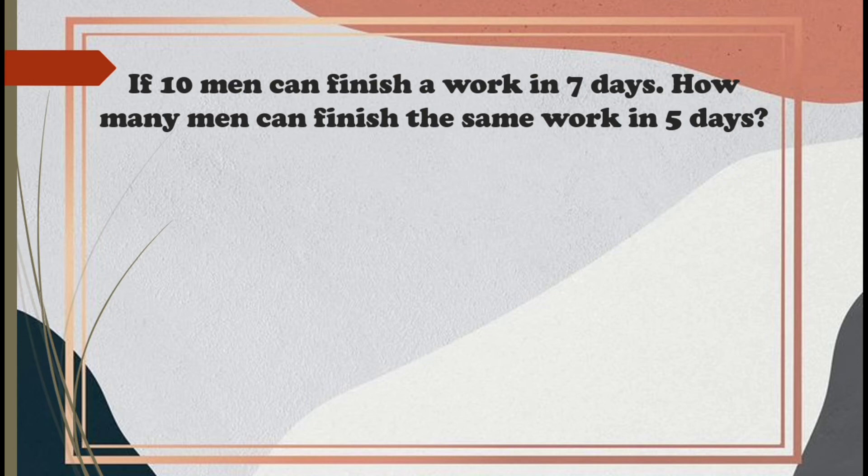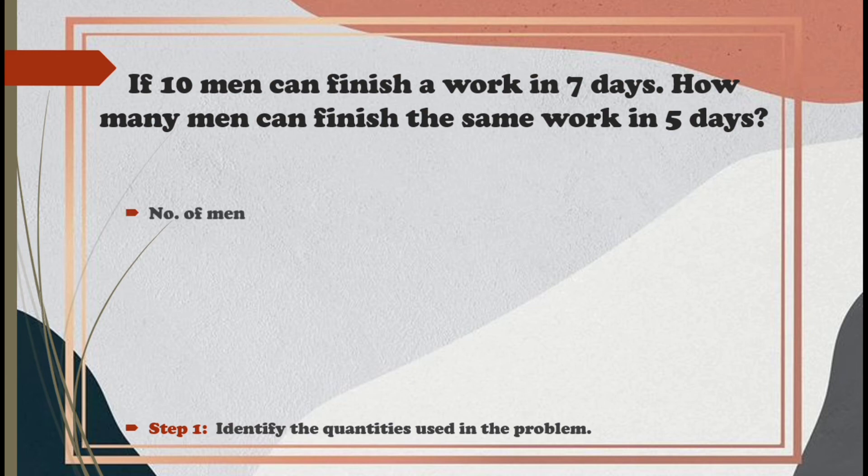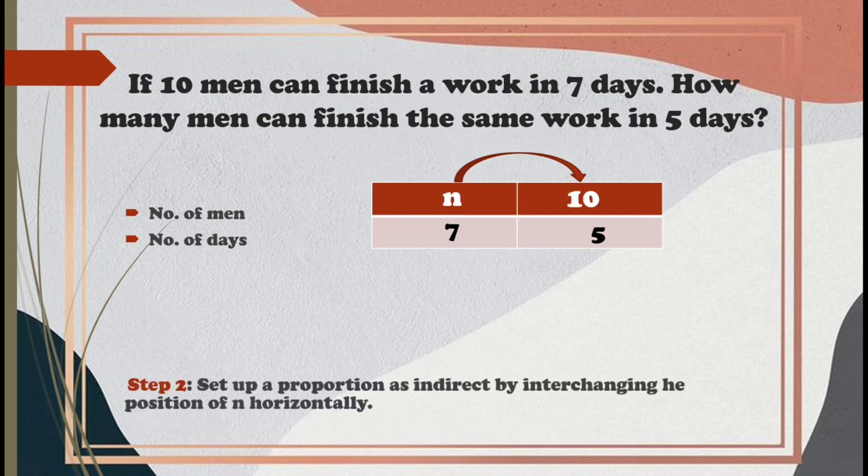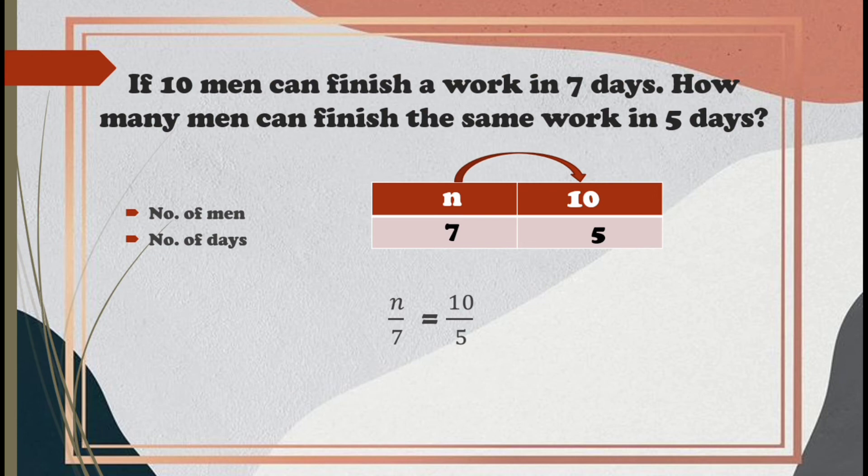The first step we need to know is to identify the quantities used in the problem. Here, we have the number of men and the number of days. It is given that 10 men can finish the work in 7 days. Now, for 5 days, we're still looking for it. That's why, let's put N first. Now, the next step is to set up a proportion. Let's interchange the position of N horizontally to the given number 10. There!